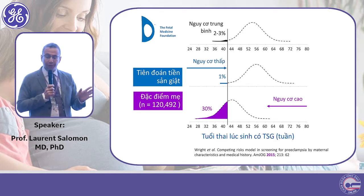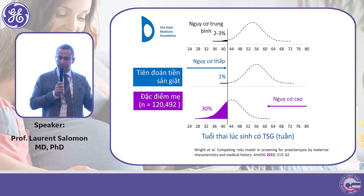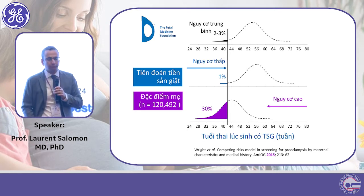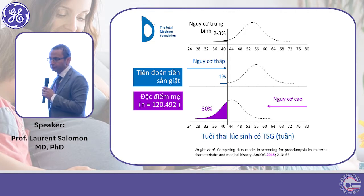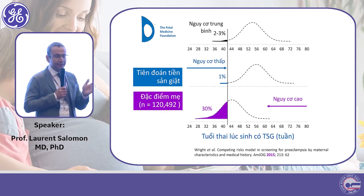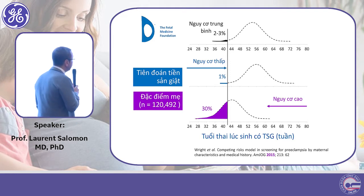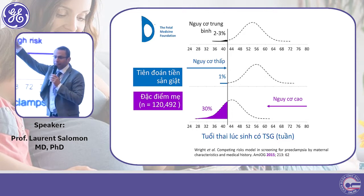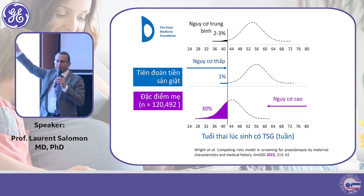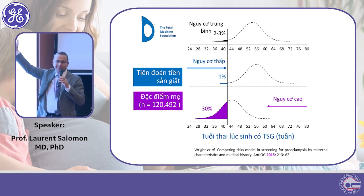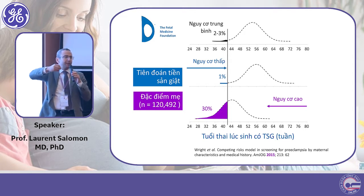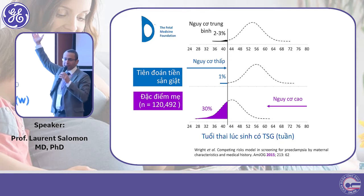The assumption of this competing risk model is that every woman will develop preeclampsia. The adjusting variable is when preeclampsia will occur. If the model says a woman will develop preeclampsia at 54 weeks of gestation — after delivery, which is impossible — that means this woman is considered low risk for preeclampsia.